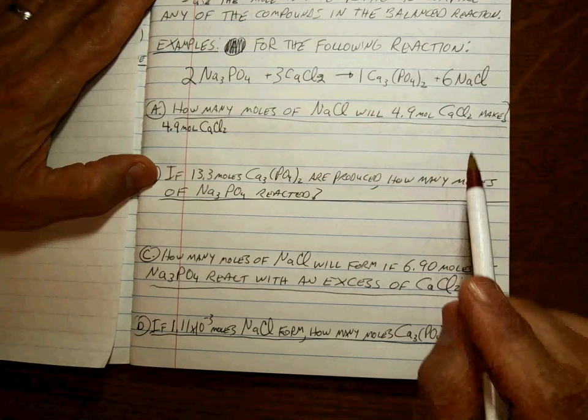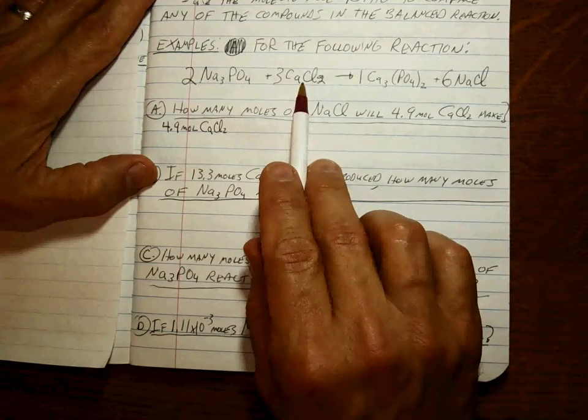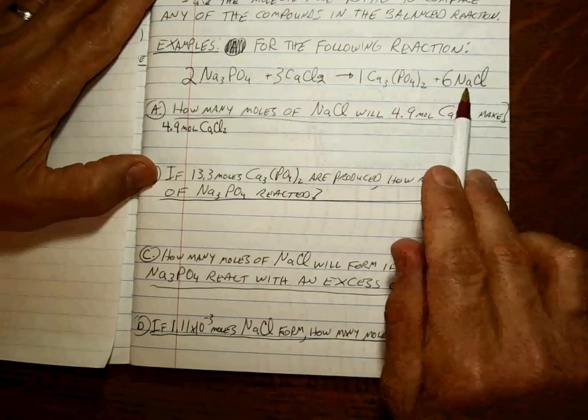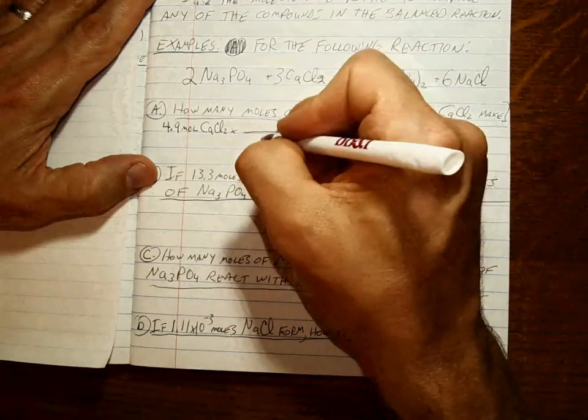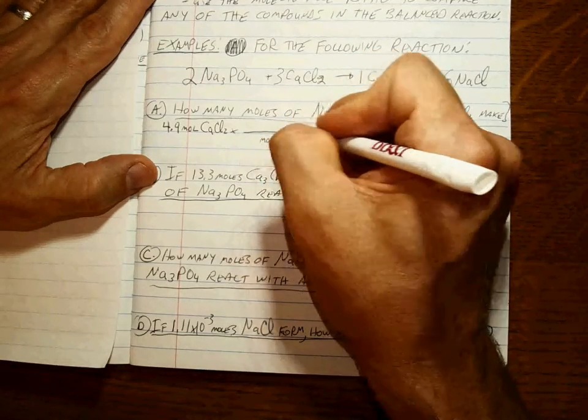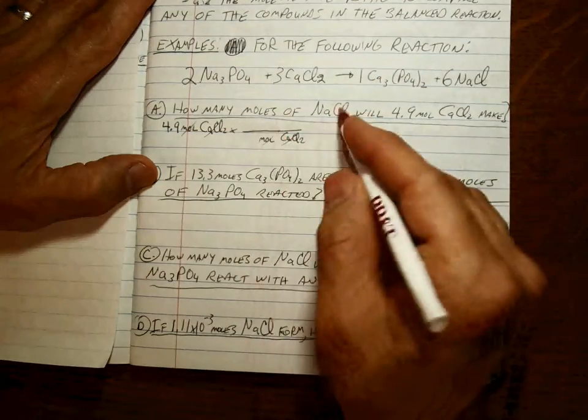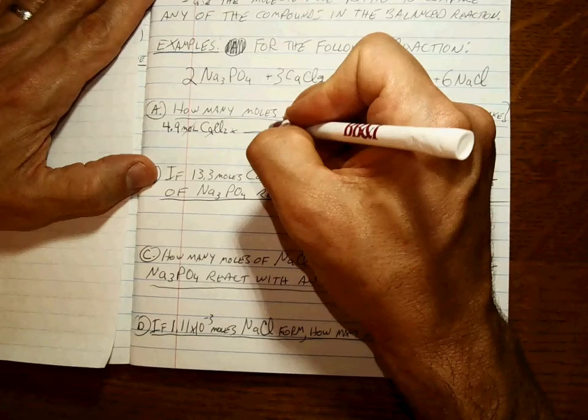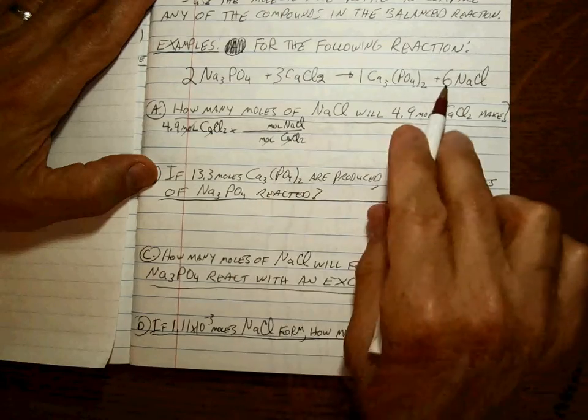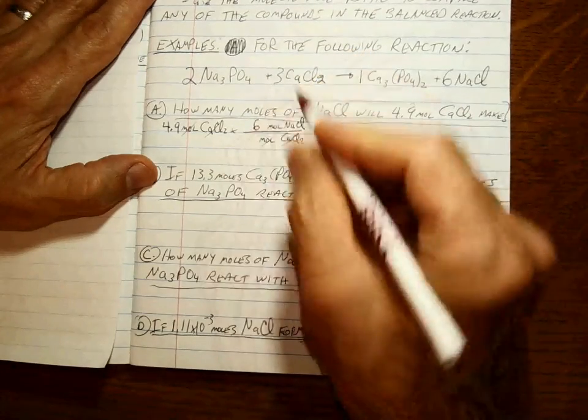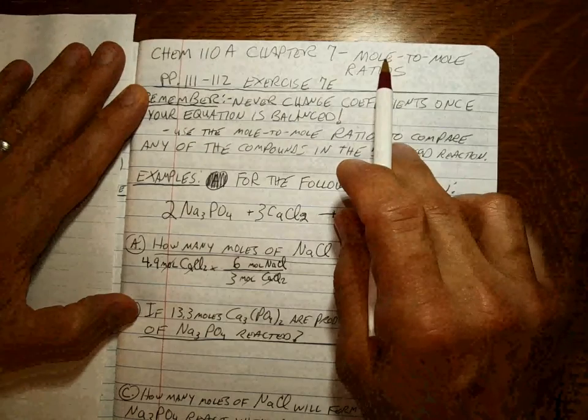All right, so if we're comparing, for this problem, this reactant with this product, what goes on top, what goes on bottom? We can't just say moles. You have to say moles of calcium chloride goes on the bottom—that's the only way that both of these cancel. We want moles of sodium chloride at the top. And what are those ratios? The ratio is six to three, comes straight off the mole-to-mole ratio. That's the key to everything here.